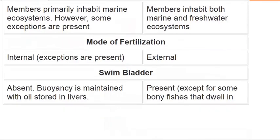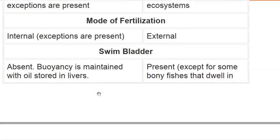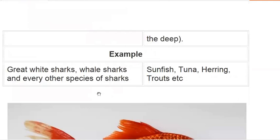Swim bladder is absent in cartilaginous fish. Buoyancy is maintained because oil is stored in the liver. In bony fish, the swim bladder — also called an air bladder — is present and helps maintain buoyancy. Some bony fish like great white sharks and whale sharks are also notable examples.